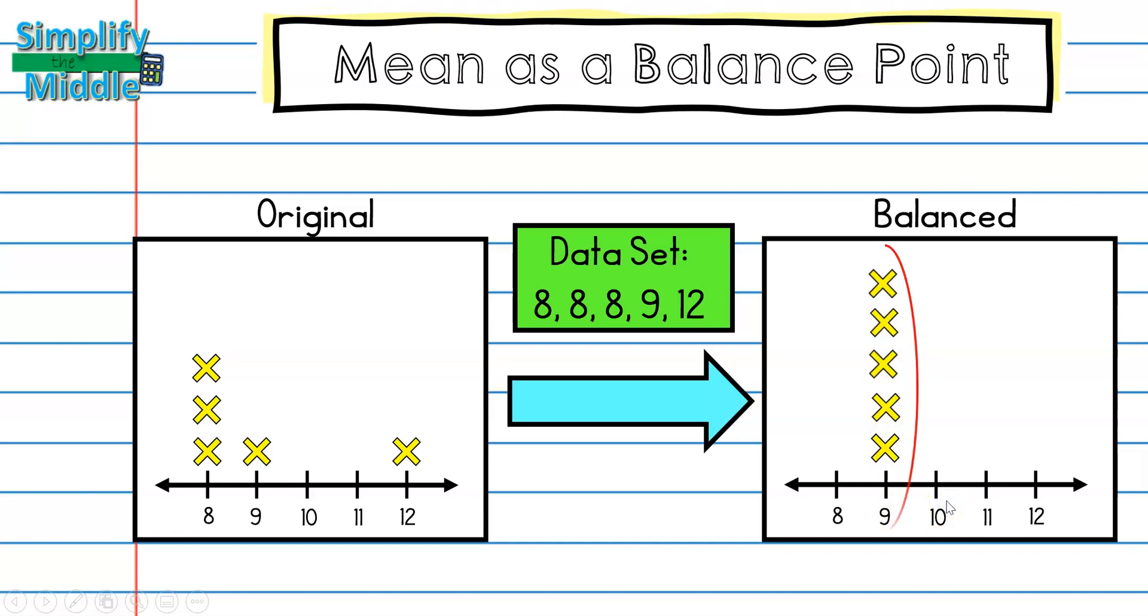Now you'll notice that all my data points are stacked above the number 9. That means that my balance point is 9, and that's all the steps in order to find mean as balance point.